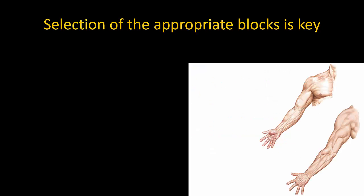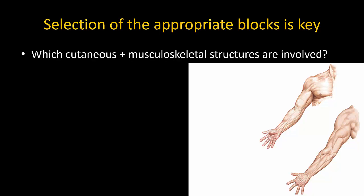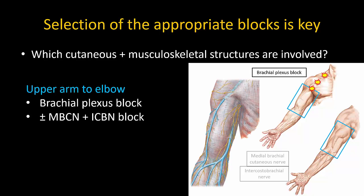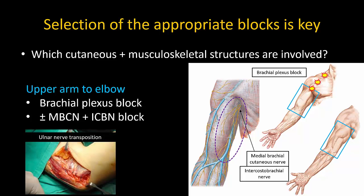What does all of this mean for performing distal upper limb blocks? It means being clear about which cutaneous areas and musculoskeletal structures we wish to cover. Generally speaking, if we wish to cover the proximal upper limb to the elbow, one of the brachial plexus blocks is recommended, plus blockade of the medial brachial cutaneous nerve and intercostobrachial nerve if the skin incision extends into the medial aspect of the upper arm. An example would be ulnar nerve decompression or transposition at the elbow.